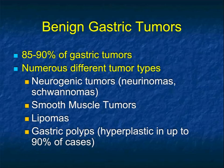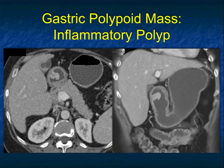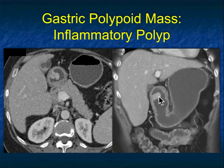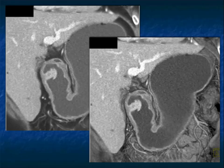There are also benign gastric tumors which can overlap with some of the malignancies — neurogenic tumors, smooth muscle tumors, lipomas, and gastric polyps. Here's a nice example of a polypoid mass in the antrum with beautiful polypoid appearance, but it has some increased vascularity, so you can't call it a benign polyp. On biopsy and resection, this was an inflammatory polyp. You can imagine worrying about a malignancy. Polyps don't typically enhance, but they may, as in this case.